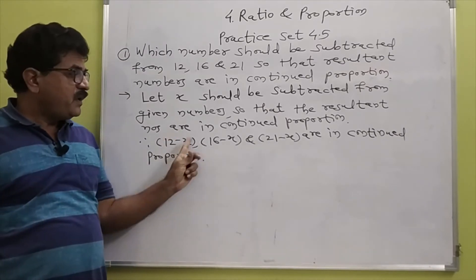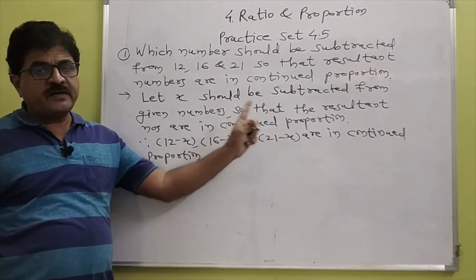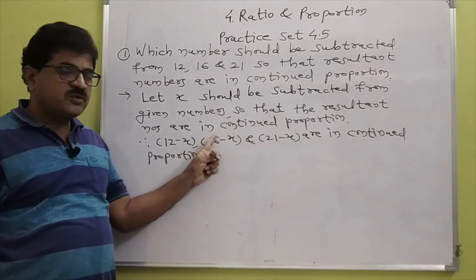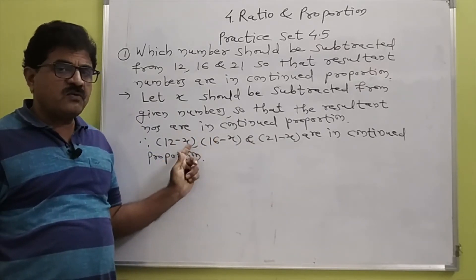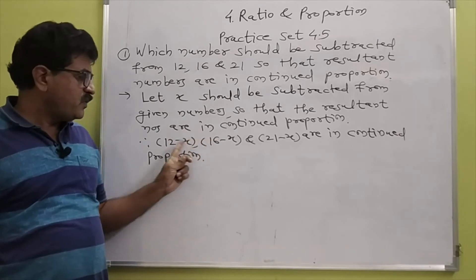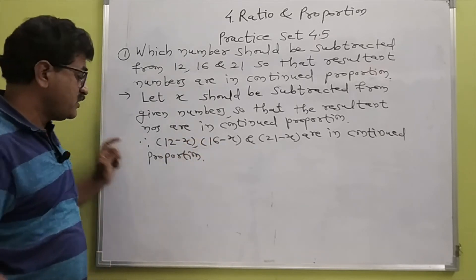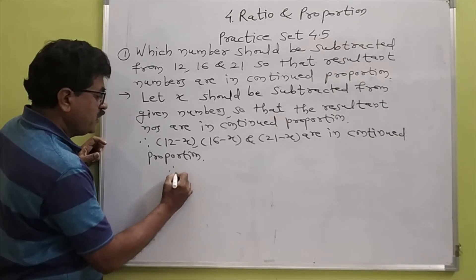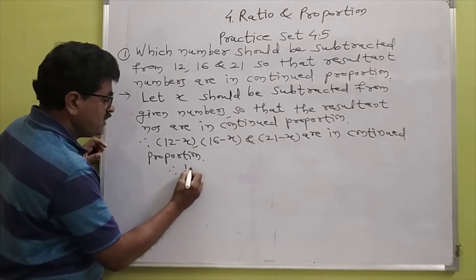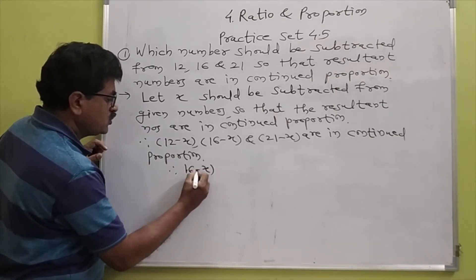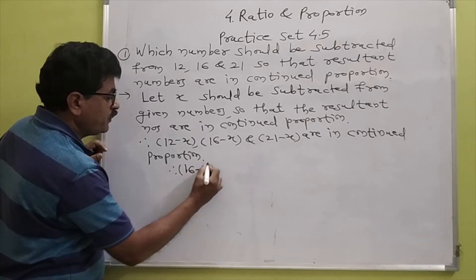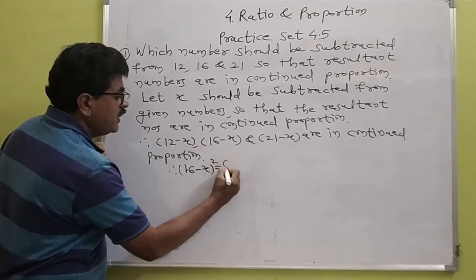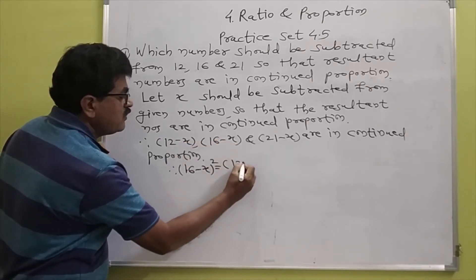We know the property: if A, B, C are in continued proportion, then B squared is equal to AC. Therefore, here the value of B is 16 minus X. Therefore, 16 minus X whole squared is equal to B squared, which equals AC.